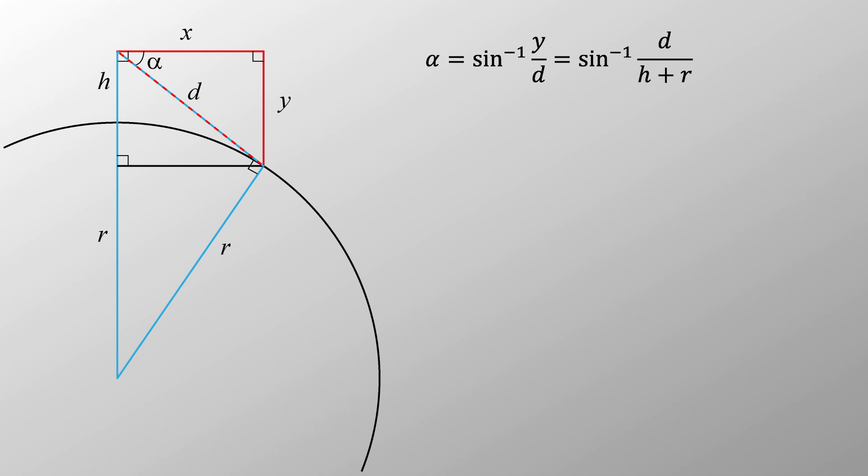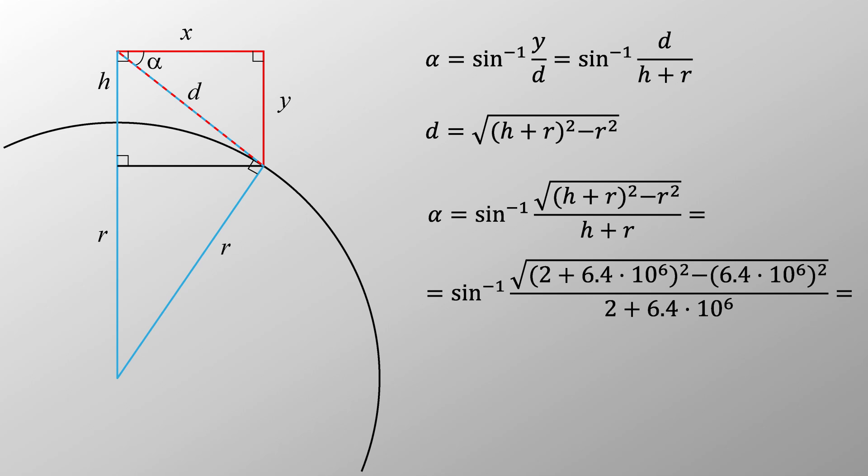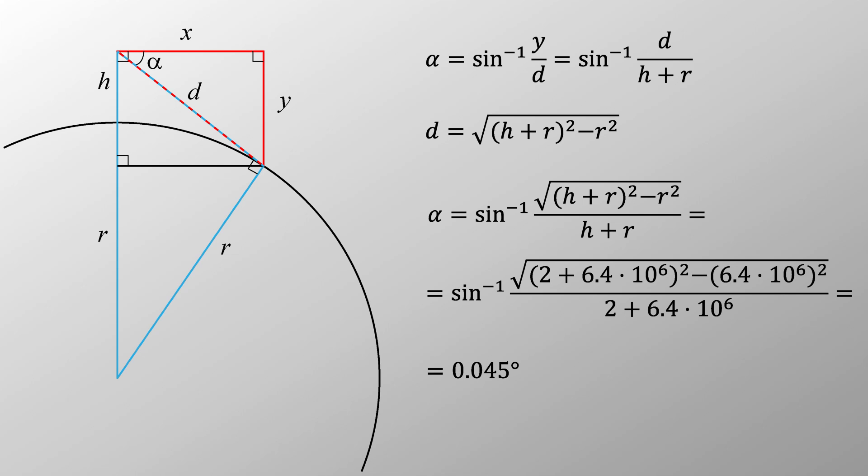This allows us to work out alpha as follows. Alpha is the sine inverse of y over d, which, since the triangles are similar, is equal to sine inverse d over h plus r. We can work out d using Pythagoras' theorem. Now we just plug in the values of h and r and we find that alpha is 0.045 degrees. While the human eye can resolve that angle,